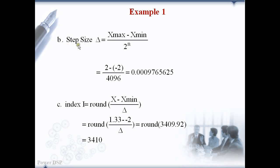Next we find the step size using the equation: x maximum minus x minimum divided by 2 to the power n. x maximum is 2 and x minimum is minus 2, and 2 to the power n is 4096. After substituting these values we get the step size.